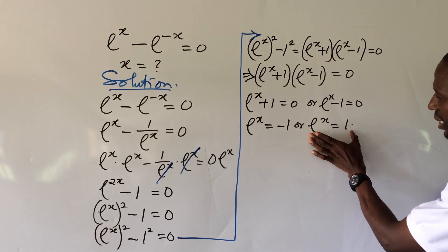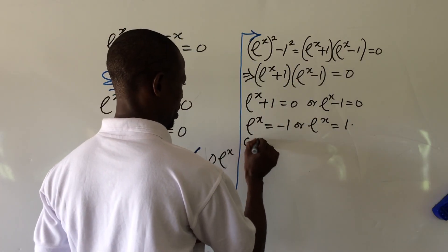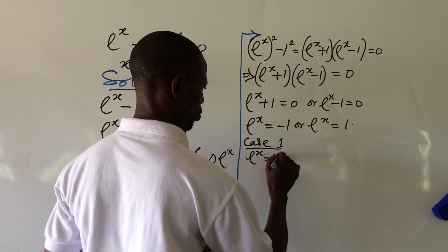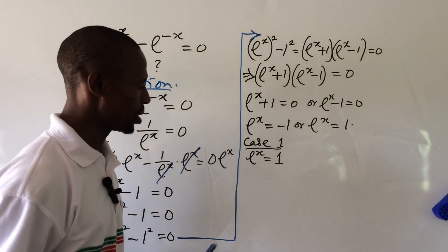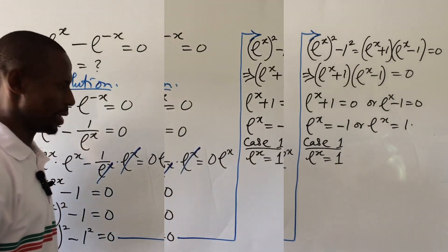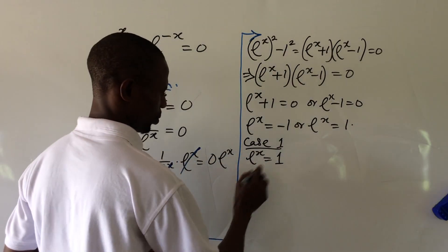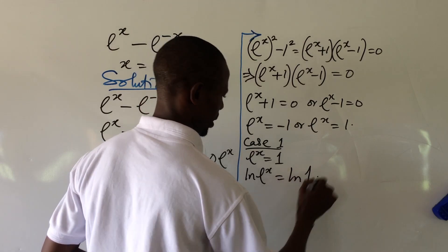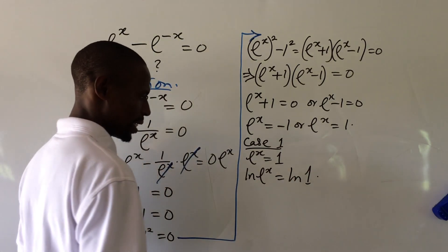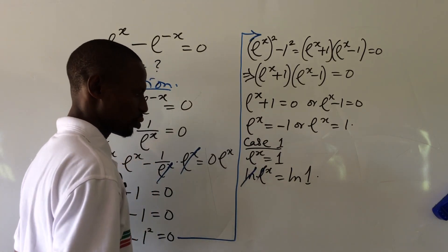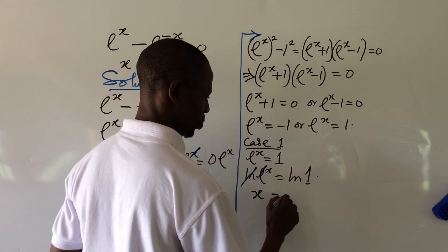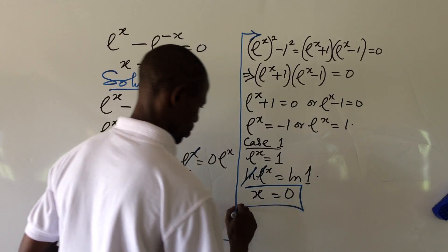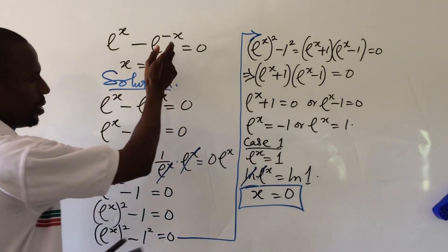Now we are looking for x. Let's handle Case 1 first. We have e to the power of x equal to 1. What we do here is bring in a natural log. So we have ln of e to the power of x equal to ln of 1. The natural log cancels the exponential, leaving us with x equal to ln 1, which gives us zero. So x equals zero is the first root to our equation.